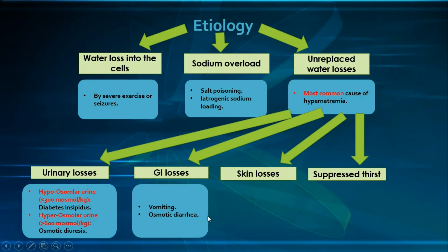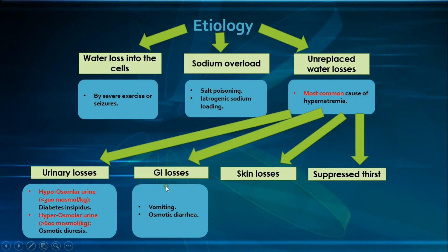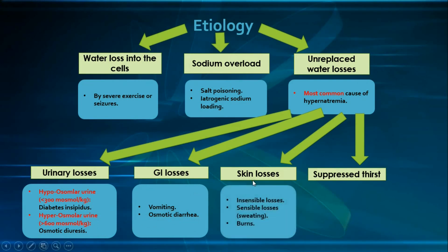GI losses primarily involve vomiting and osmotic diarrhea, both of which result in hypotonic fluid loss. However, with prolonged vomiting or diarrhea, there is increased ADH release causing free water retention, and increased thirst prompting oral free water intake. With this chronic free water replacement alongside ongoing loss of sodium and water, the result is depletion of total body sodium and dilutional hyponatremia.